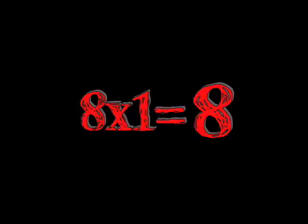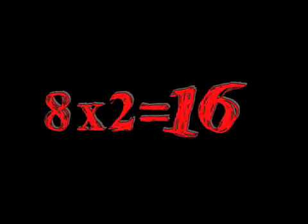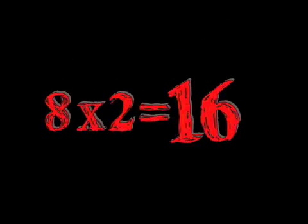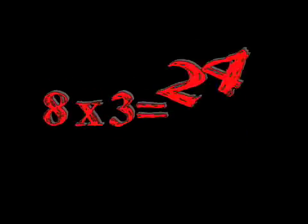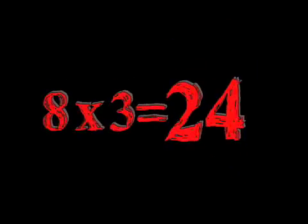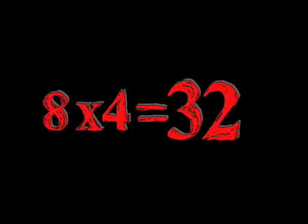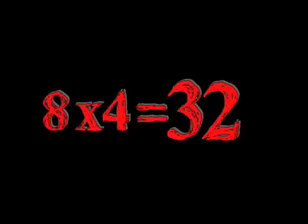Eight times one is eight. Eight times two is sixteen. Eight times three is twenty-four. Eight times four is thirty-two.